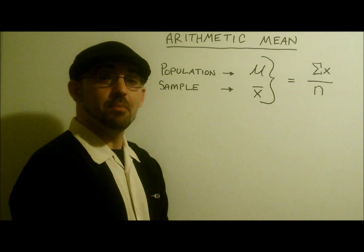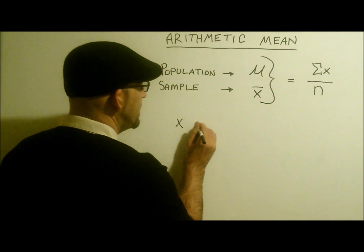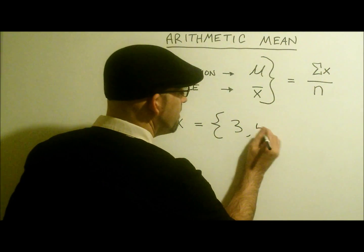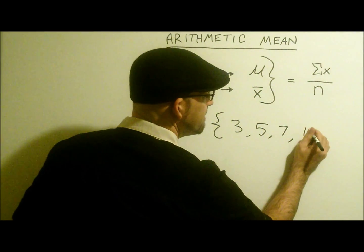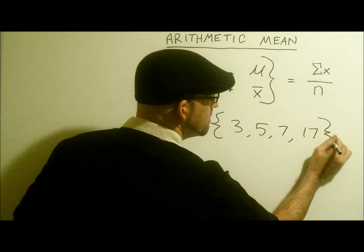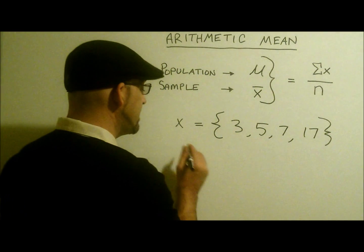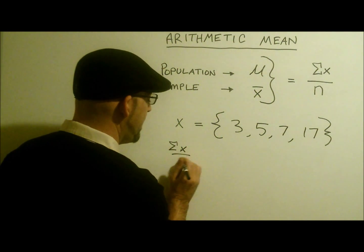Let's say I have a population size of x equals 3, 5, 7, 17. And let's use our formula sigma x divided by n.